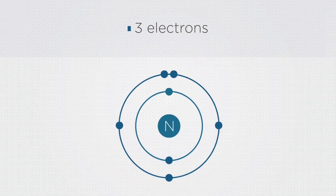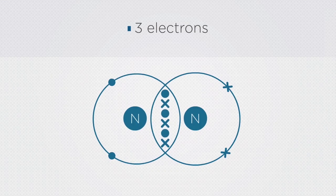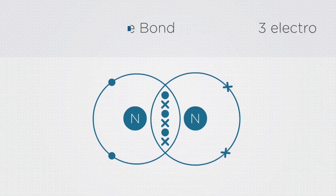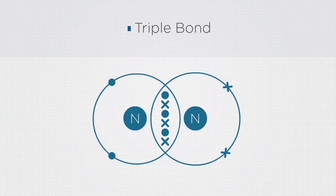If you said that three electrons are available to form a shared pair, you would be correct. You should see that there are three shared pairs of electrons in the overlap of the shells. This is called a triple bond. You should also notice that this example fulfills the octet rule.